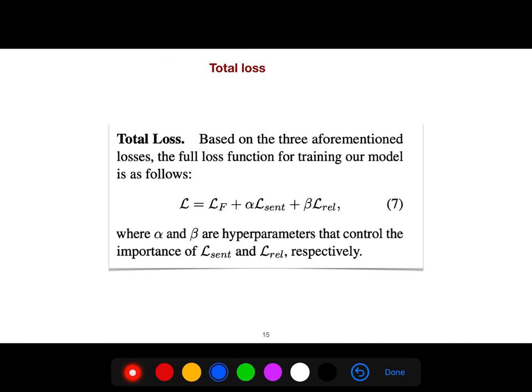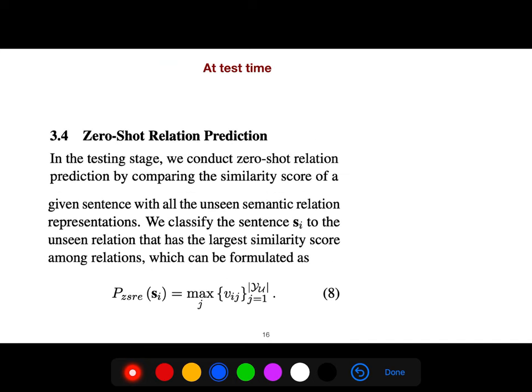And this is the total loss. So at the test time, they conduct zero-shot learning prediction by comparing the similarity score of a given sentence with all unseen semantic relation representations. And they classify a sentence, S sub i, to the unseen relation that has the largest similarity score among relations.